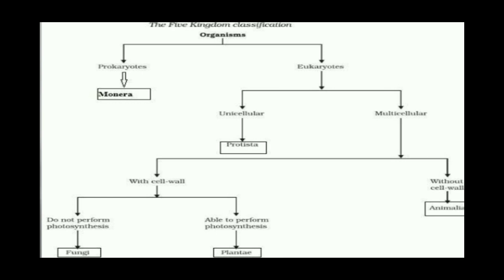R.H. Whittaker classified organisms into five kingdoms: Kingdom Monera, Kingdom Protista, Kingdom Fungi, Kingdom Plantae, and Kingdom Animalia. Kingdom Monera possesses all prokaryotes. Kingdom Protista includes all unicellular and some multicellular eukaryotes. Kingdom Fungi members do not perform photosynthesis — they are all non-green plants. Kingdom Plantae members are able to perform photosynthesis — they are all green plants. Kingdom Animalia members are animals whose cells do not have a cell wall.